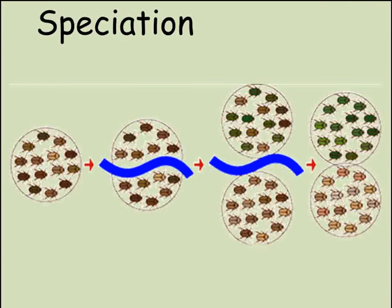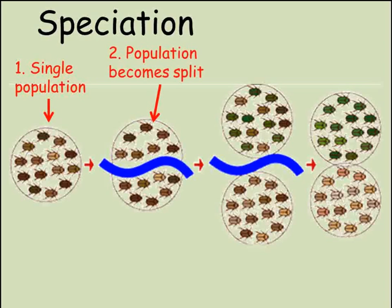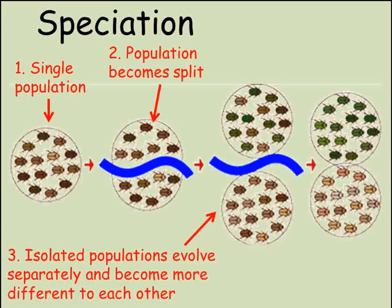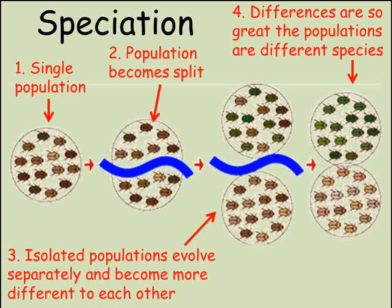Eventually, the individuals in a group will have changed so much from the original group that they are no longer recognised as being in the same species. This is called speciation. This could happen if a population becomes split up physically — for example, by a mountain range or an ocean. The different conditions in the two areas will lead to natural selection selecting different traits within the two now separate groups. Eventually, the differences will be so great that individuals within these two groups would not be able to breed together, which means they are now different species.